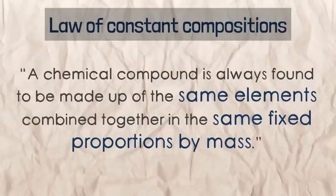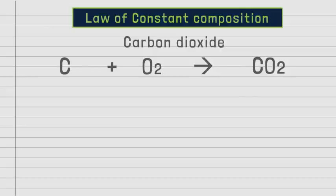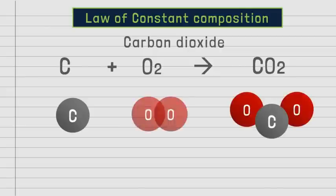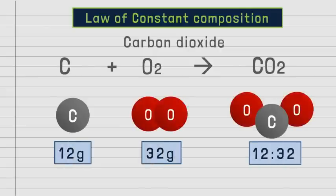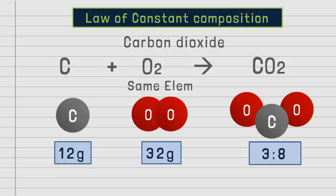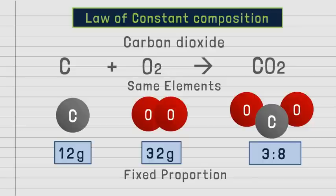Law of Constant Composition: A chemical compound is always found to be made up of the same elements combined in the same fixed proportion by mass. For example, carbon dioxide has 12 grams of carbon for every 32 grams of oxygen, giving a carbon-to-oxygen ratio of 12:32, which simplifies to 3:8. Carbon dioxide follows the law of constant composition, as it is always made up of carbon and oxygen in the fixed proportion of 3:8.